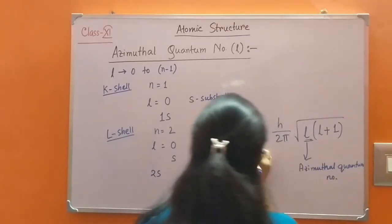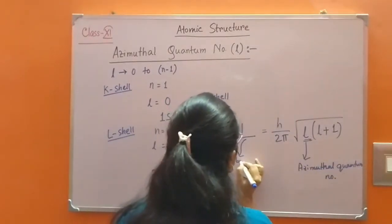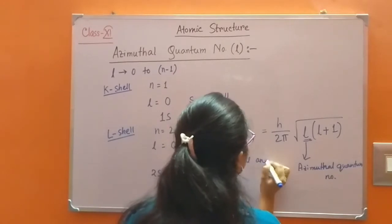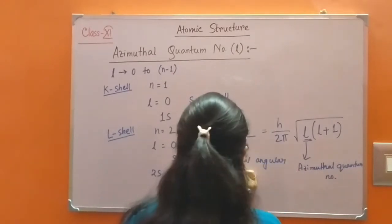From azimuthal quantum number, the orbital angular momentum of an electron can be calculated. Orbital angular momentum of electron is L equals H divided by 2π into root of L(L+1), where L is the azimuthal quantum number. This capital L is the orbital angular momentum of the electron.